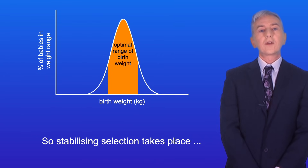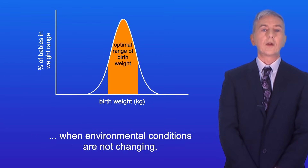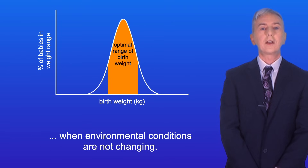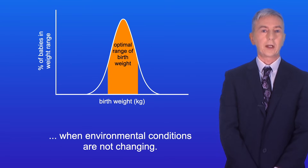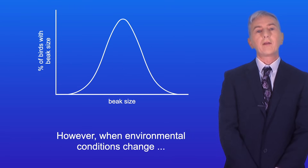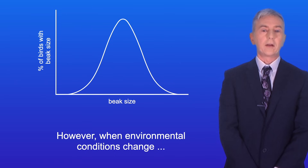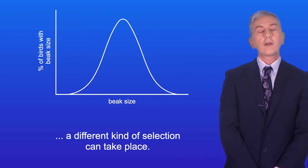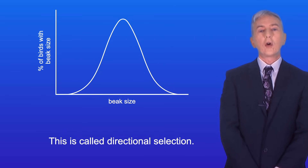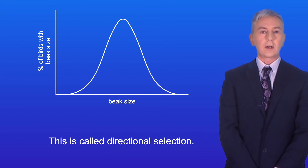Stabilizing selection takes place when environmental conditions are not changing. However, when environmental conditions change, a different kind of selection can take place. This is called directional selection.